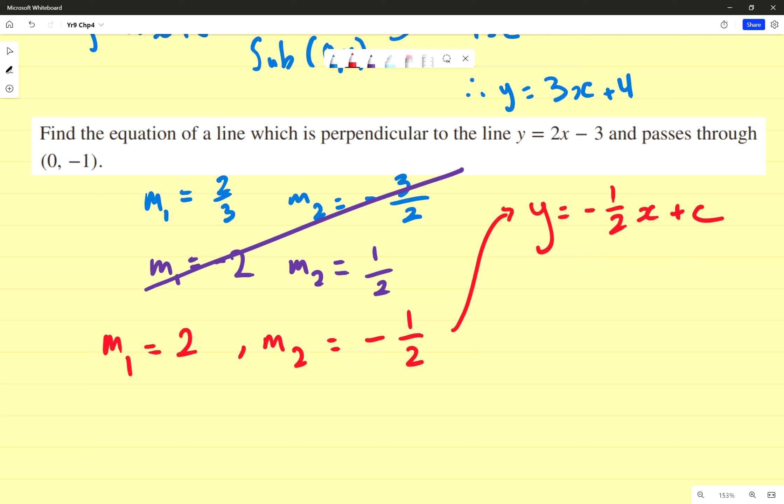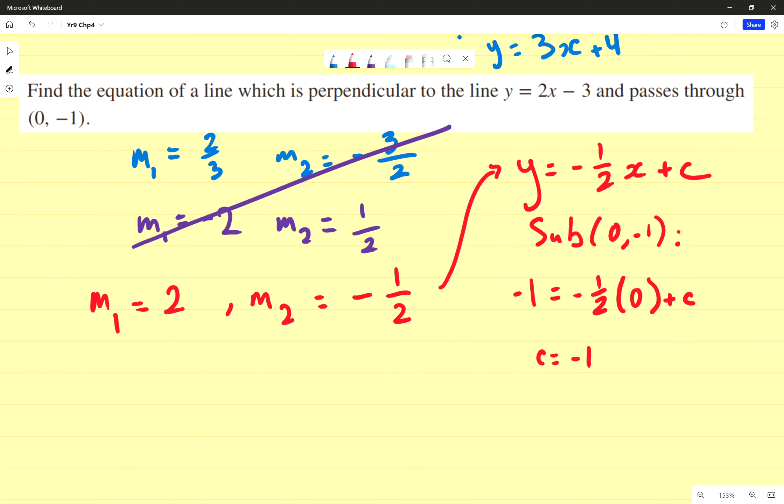It's passing through (0, -1). A lot of students accidentally use the y equals 2x minus 3 and write y equals 2x plus c and substitute that point. That's not going to give you the same thing. We need to substitute the point into this new equation. So I write sub (0, -1), and I get negative 1 equals negative half times 0 plus c. c equals negative 1. Again, we can't stop there. We were looking for the equation, not the value of c. So we get y equals negative 1 half x minus 1. Are there any questions about that for those of us following along with this exercise?